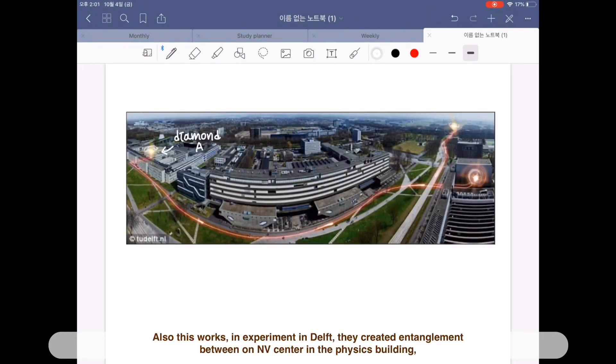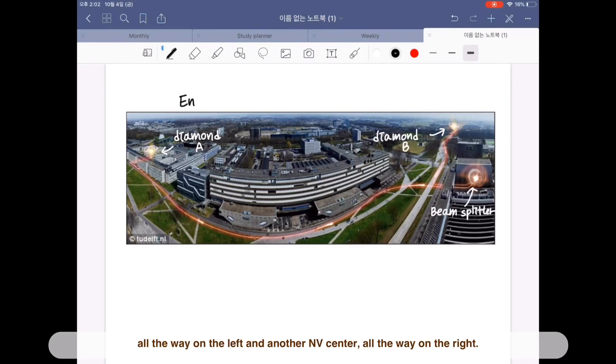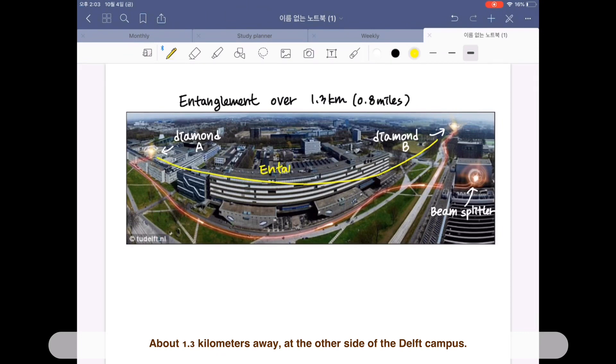Also, this works. In experiment in Delft, they created entanglement between an NV center in the physics building all the way on the left and another NV center all the way on the right,